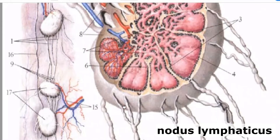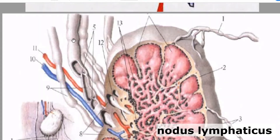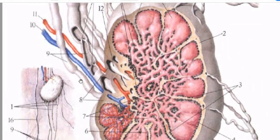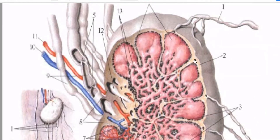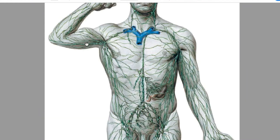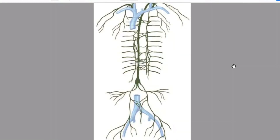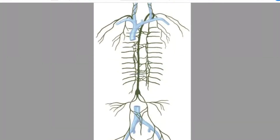Lymph nodes have afferent vessels that bring lymph into the nodes and efferent vessels that carry lymph out. These efferent vessels then join with others, becoming larger, and eventually give rise to trunks. We have only about five lymph trunks — truncus lymphaticus. Here you can see a general overview of the lymph trunks and ducts.